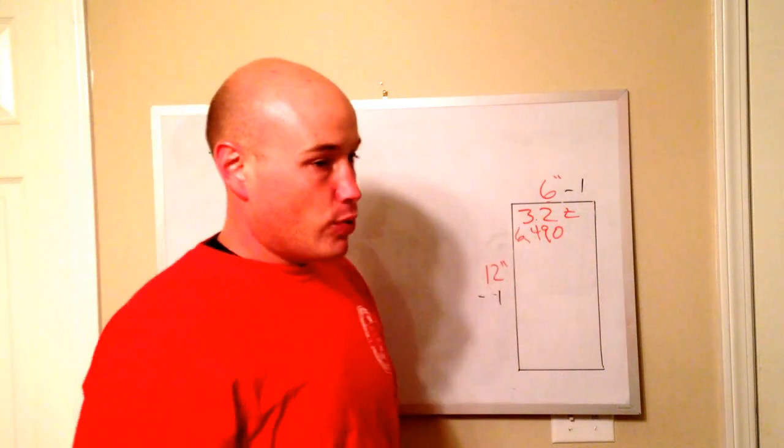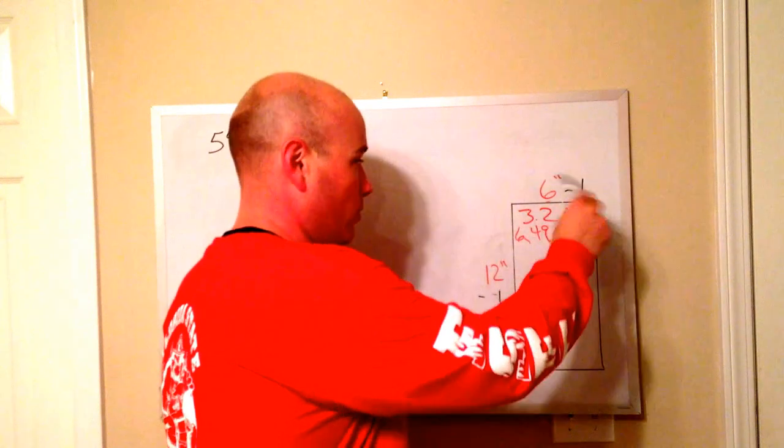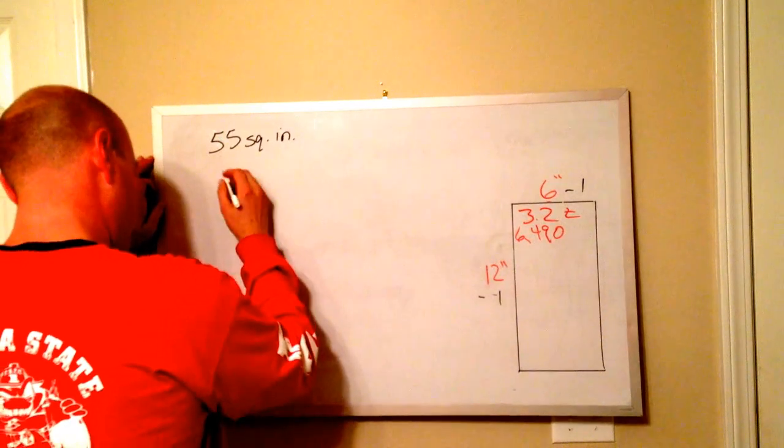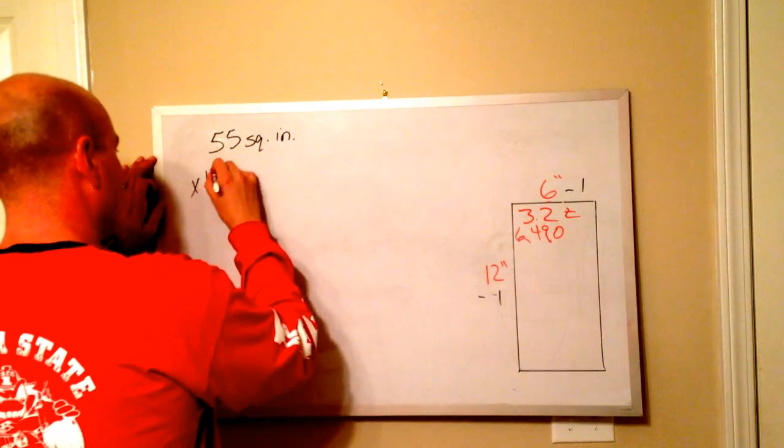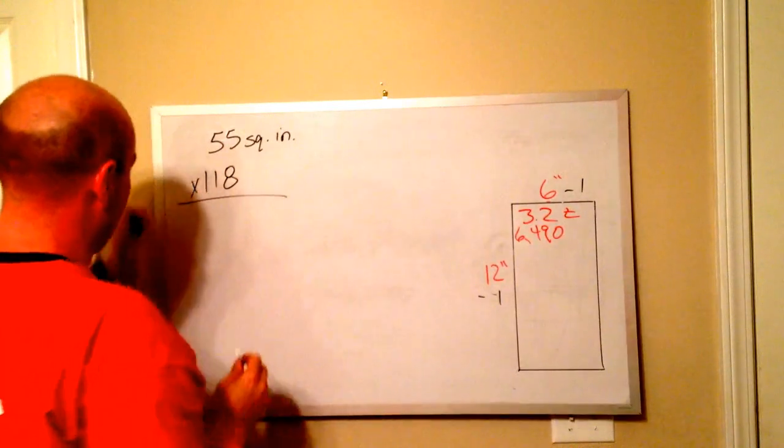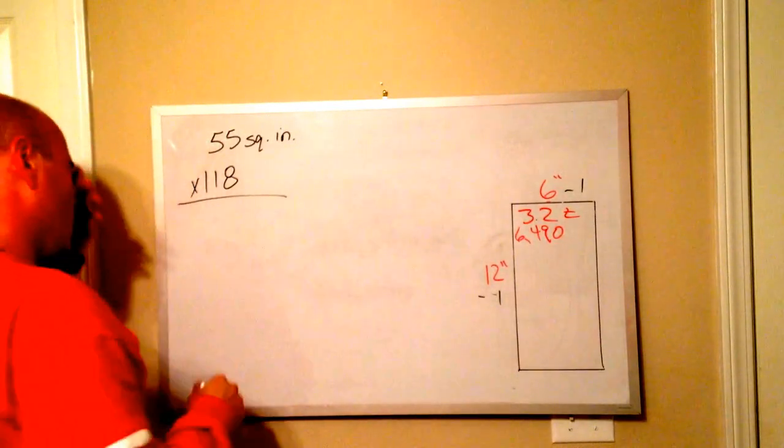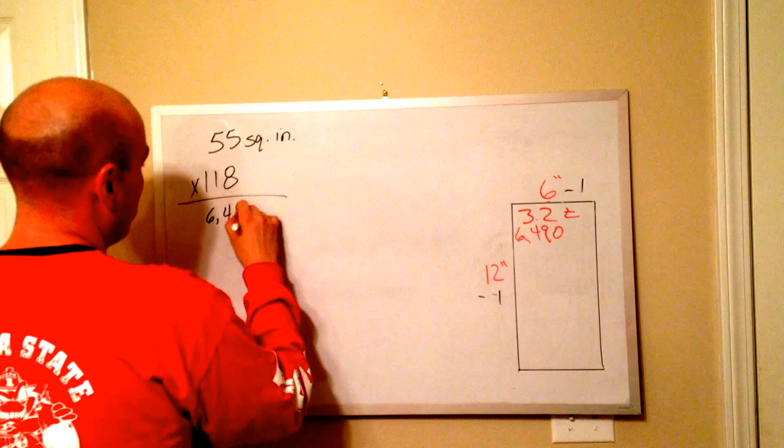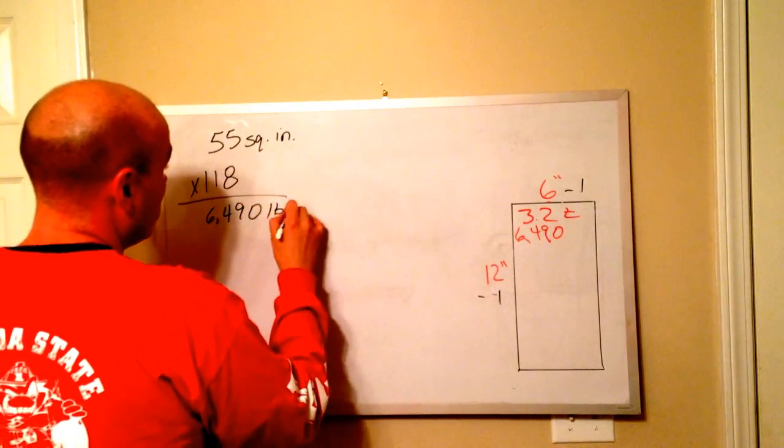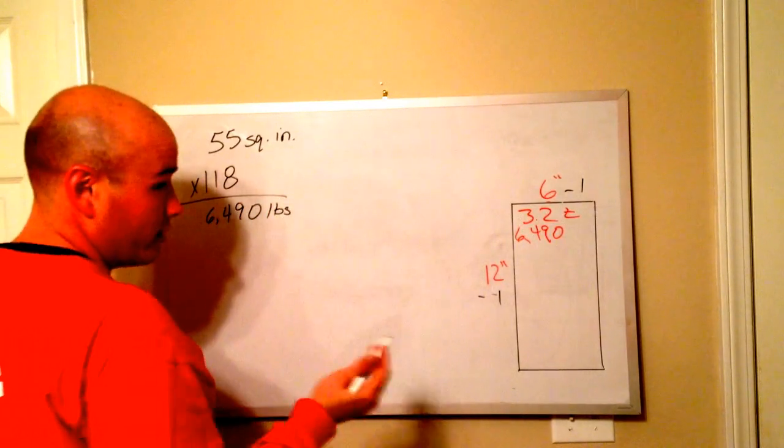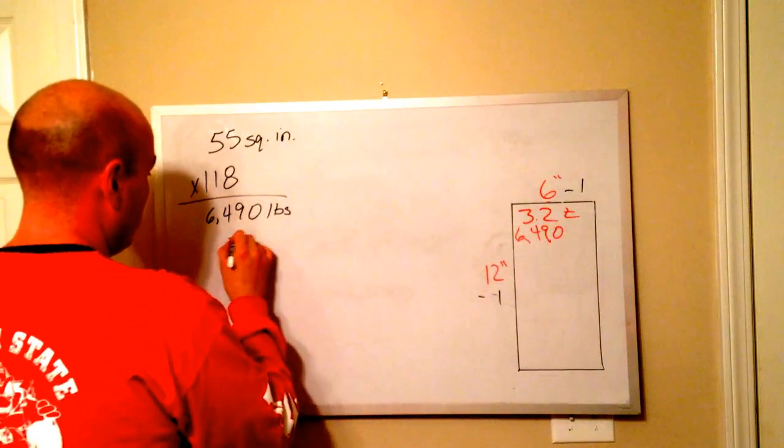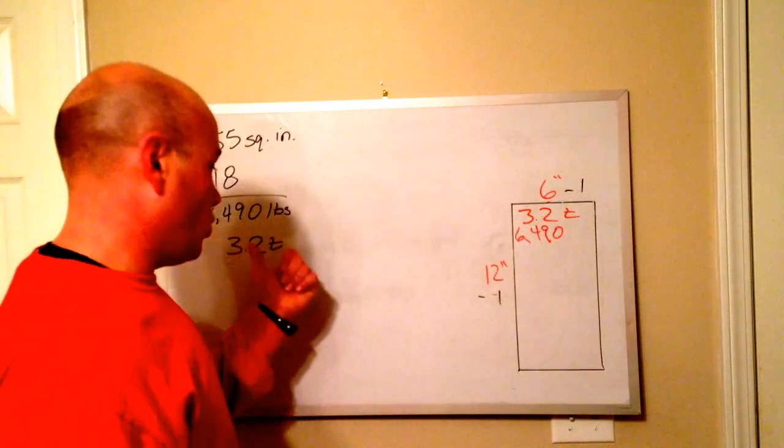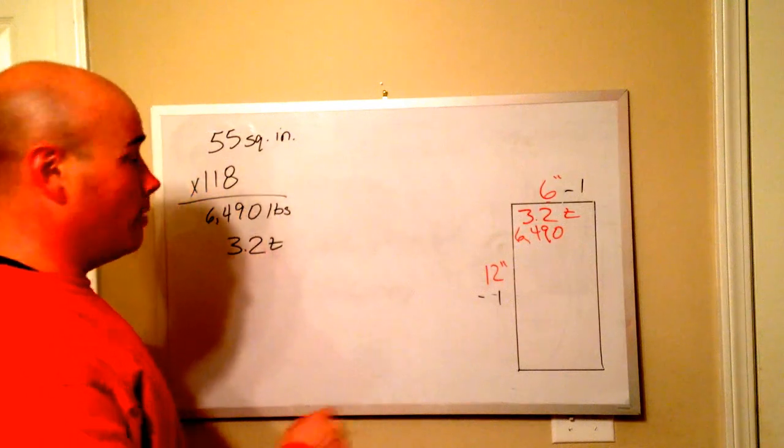To figure out if we didn't know it was rated at 3.2 tons, you just measure the bag with a ruler and subtract 1 from each dimension. You take your 55 square inches, multiply it by 118 PSI. 118 times 55 is going to give you 6,490 pounds, and if you divide that by 2,000, that gives you 3.2, which is where we get the 3.2 tons from. So if it's not marked, that's a quick way to find out exactly what your bag is rated for up to an inch of lift.